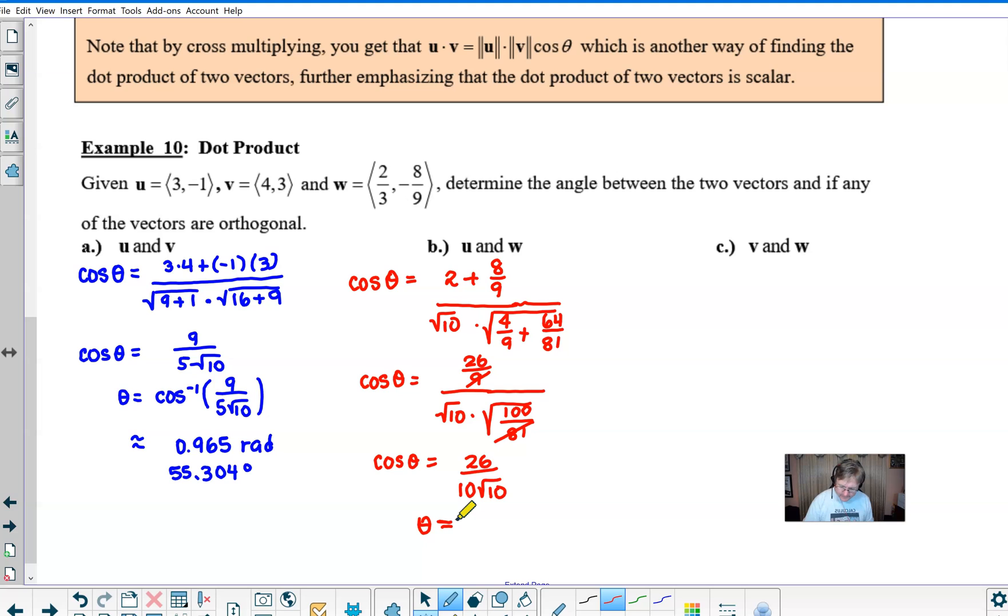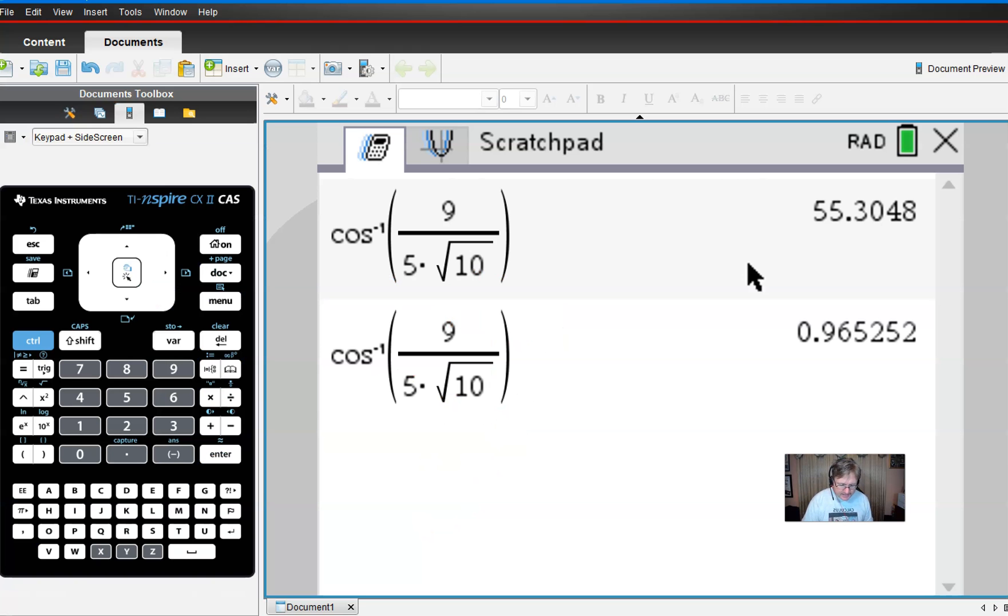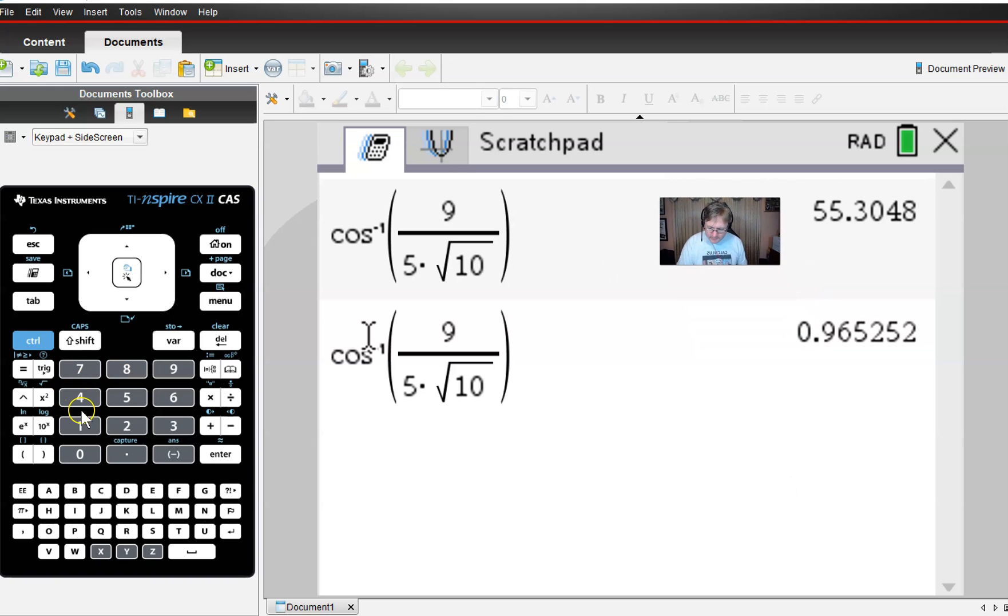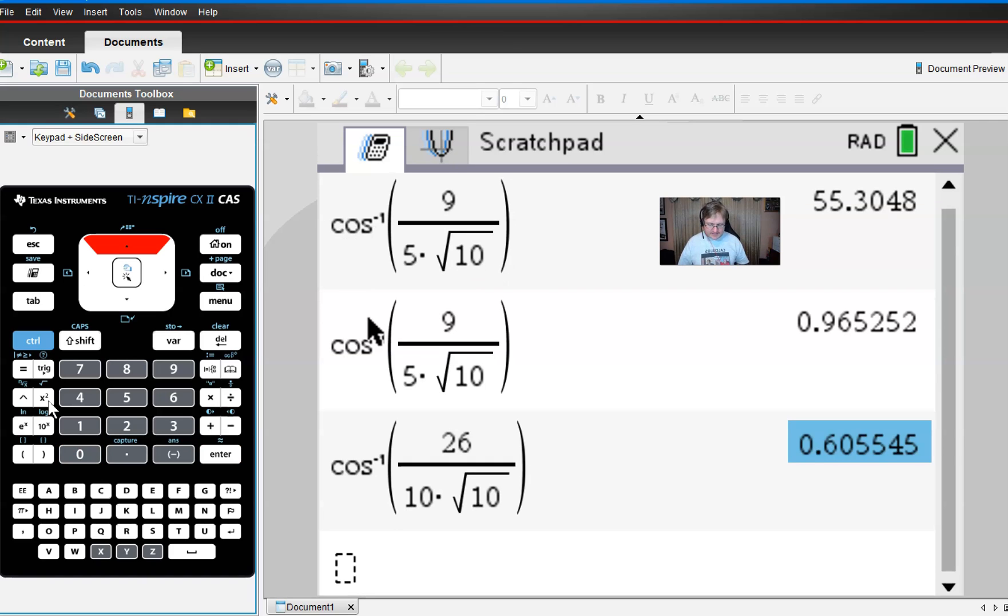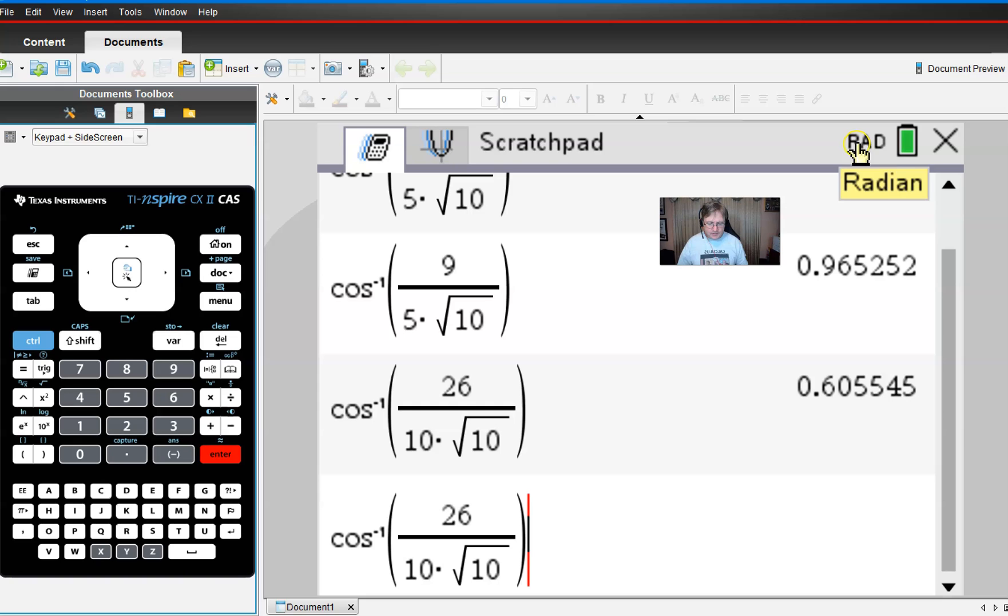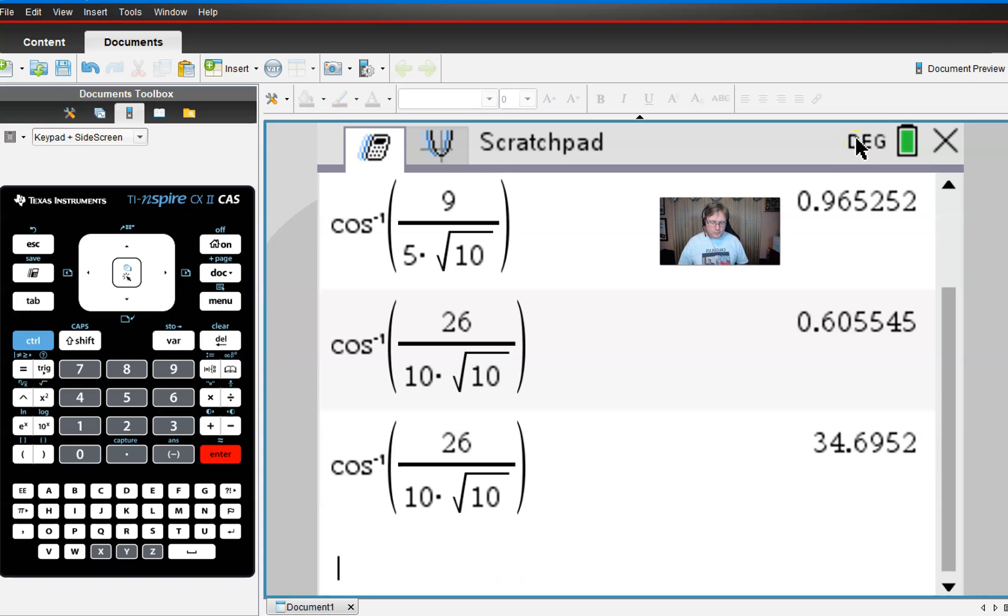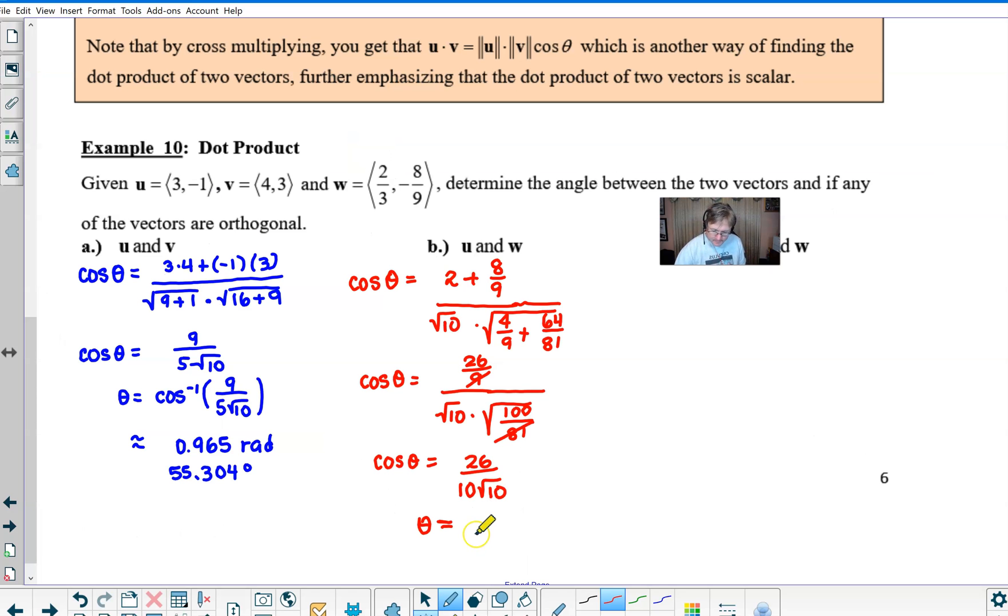And so we should be able to finish this off. So we go to the calculator and this time we're going to go into cosine inverse and then do my fraction. And then we said this was 26 over 10 times the square root of 10. If I keep this in radian mode first, I'm going to have this answer. And if I switch it over to degree mode, I'm going to have this answer. So we'll write those both up. We have 0.605 radians and then 34.695 degrees. We'll double check that just to make sure 34.695 is indeed correct. All right.